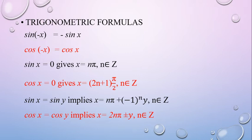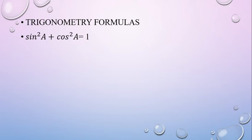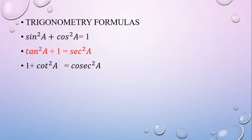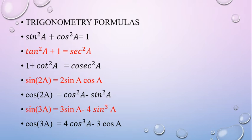Cos x is equal to cos y implies x equals 2nπ plus or minus y. Tan x equals tan y implies x equals nπ plus y, where n is an integer belonging to Z. Sin squared a plus cos squared a is equal to 1. Tan squared a plus 1 is equal to sec squared a. 1 plus cot squared a is equal to cosec squared a. Sin 2a equals 2 sin a cos a. Cos 2a equals cos squared a minus sin squared a. Sin 3a equals 3 sin a minus 4 sin cube a. Cos 3a equals 4 cos cube a minus 3 cos a.